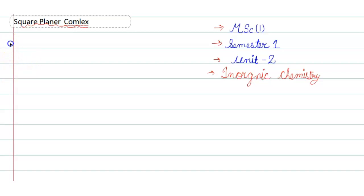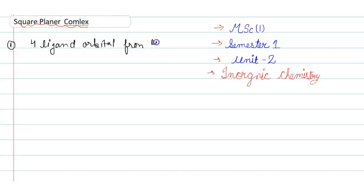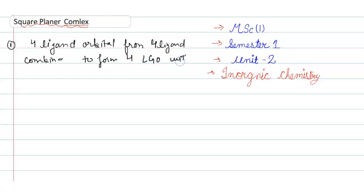The first point is: four ligand orbitals from four ligands combine to form four LGOs (ligand group orbitals) with specific symmetry, which then interact with metal orbitals of specific symmetry.